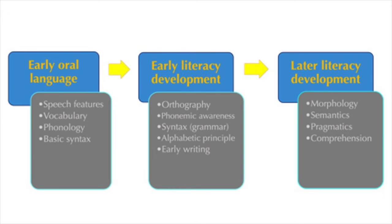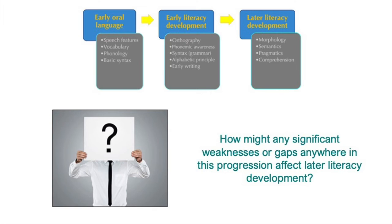To bring all of this together and look at it chronologically, here's a graphic that shows the timeline of how we acquire and master a first or native language — and this process looks a little different when learning a second or third language. Some of the systems we've learned about are part of very early oral language development: early speech, vocabulary building, phonology and phonological awareness, and eventually some understanding of basic syntax. The child then moves into early stages of developing literacy skills, and the key skills in these stages rely on the foundations built from oral language development. We should consider how significant weaknesses or gaps anywhere in this progression can affect a child's later literacy development.